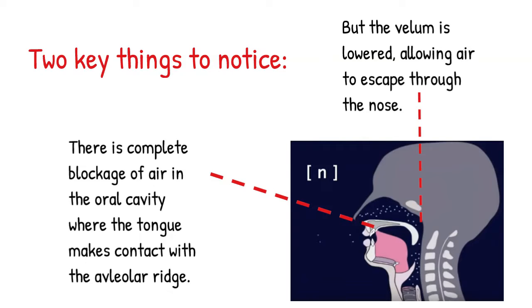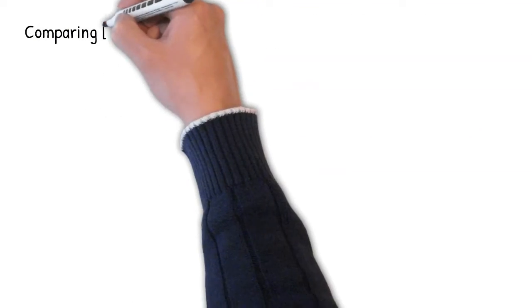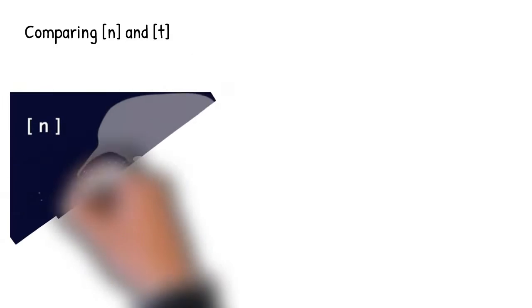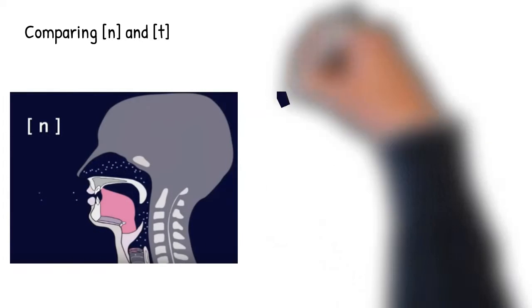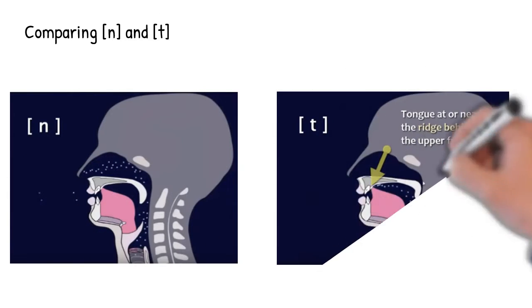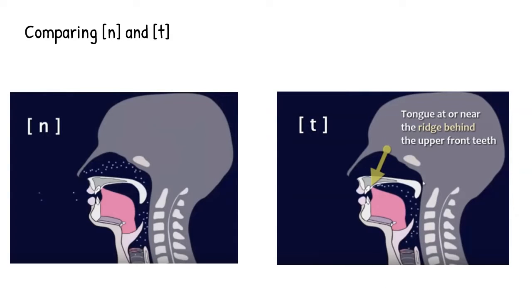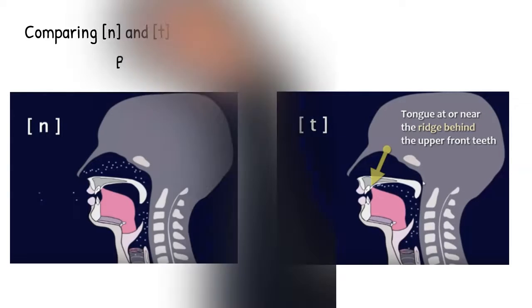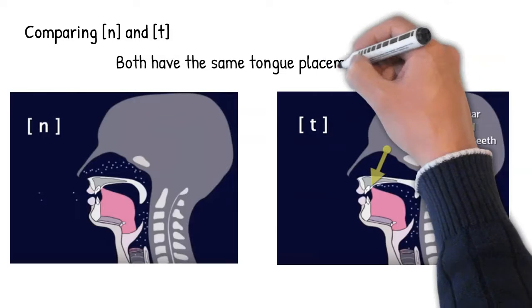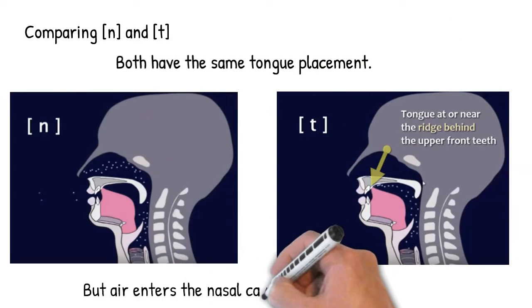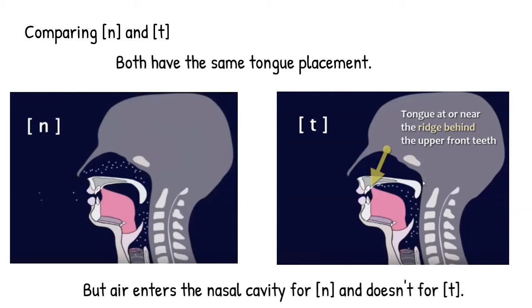The key difference between an oral stop and a nasal stop can be seen clearly if we put pictures of each side by side for comparison. Here we see an N on the left and a T on the right. While both require the same alveolar constriction in the mouth, we can see that the velum is lowered for N, allowing air to pass into the nasal cavity, while the velum is closed, that is the velum is raised for T, preventing air from passing into the nasal cavity.